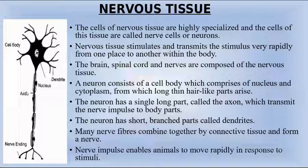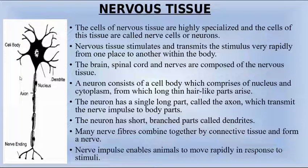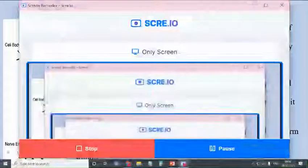Nerve impulses enable animals to move rapidly in response to stimuli. Whatever action is carried out by animals is a response to stimuli — for example, if a pin pricks your hand, that is a stimulus, and you give a response to it.